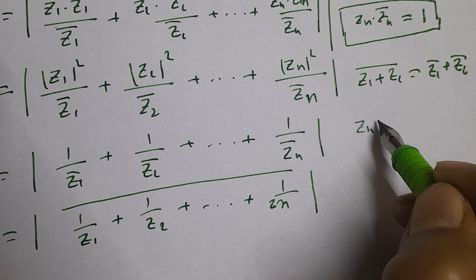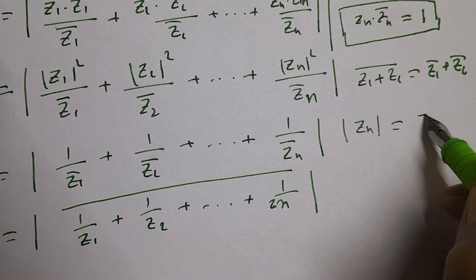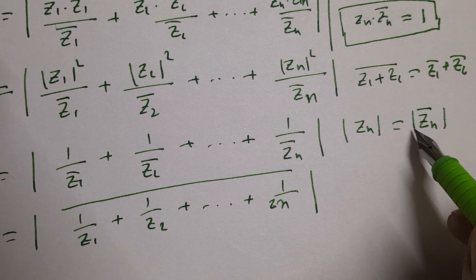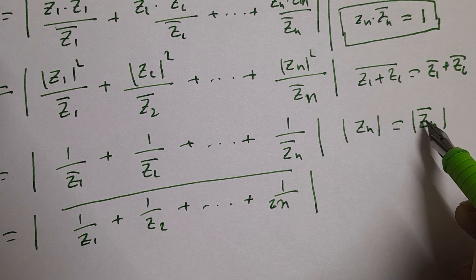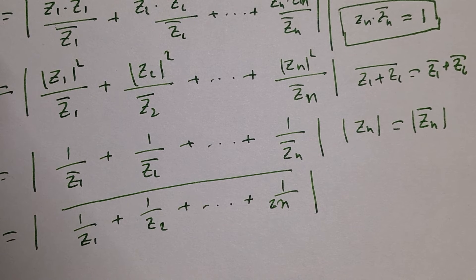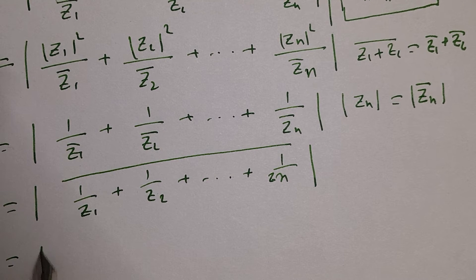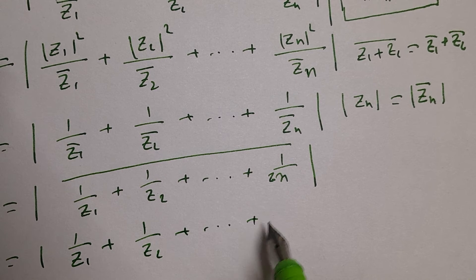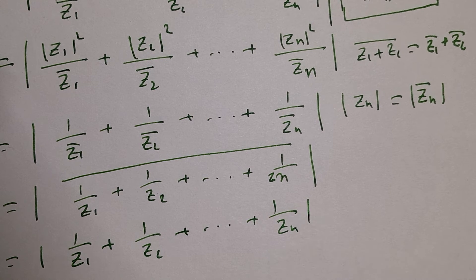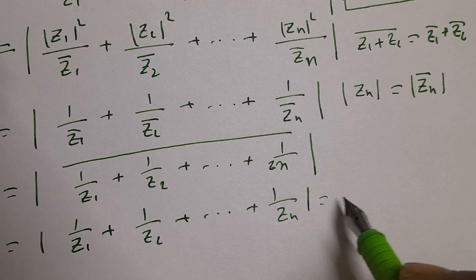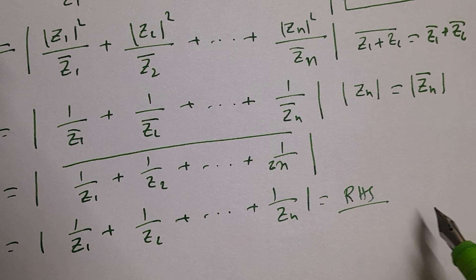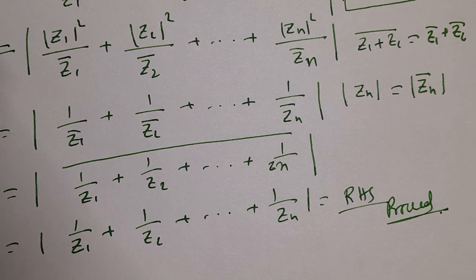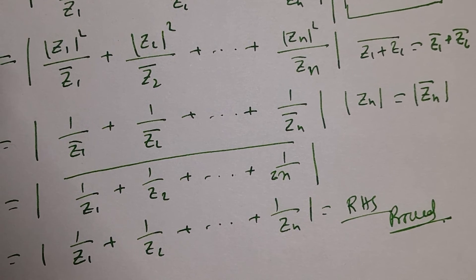Taking the modulus, |z̄ₖ| = |zₖ|. Therefore this equals the modulus of 1/z₁ + 1/z₂ + ... + 1/zₙ, which is equal to the RHS. Hence proved.